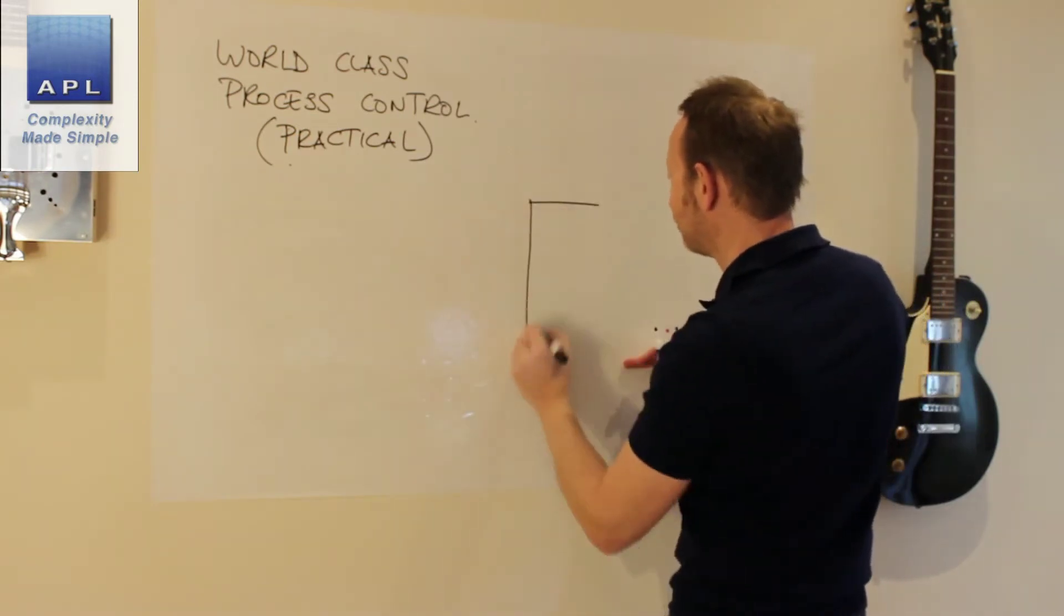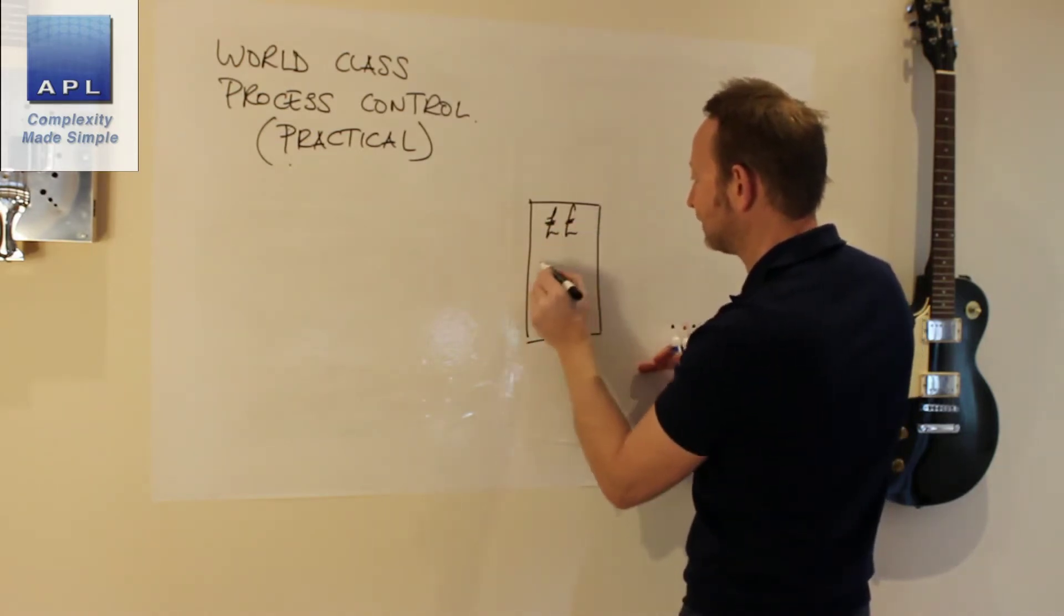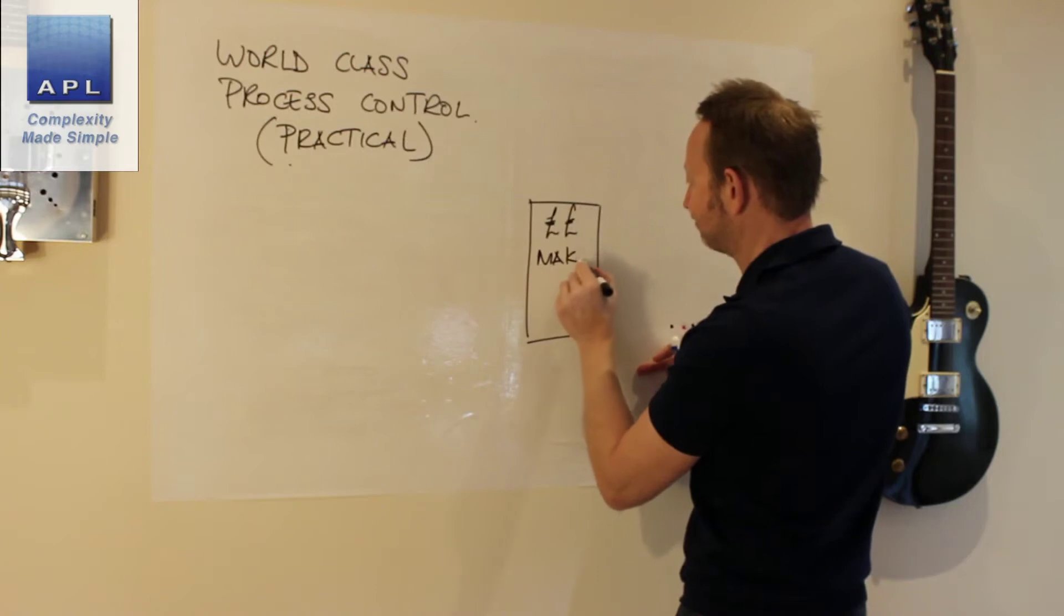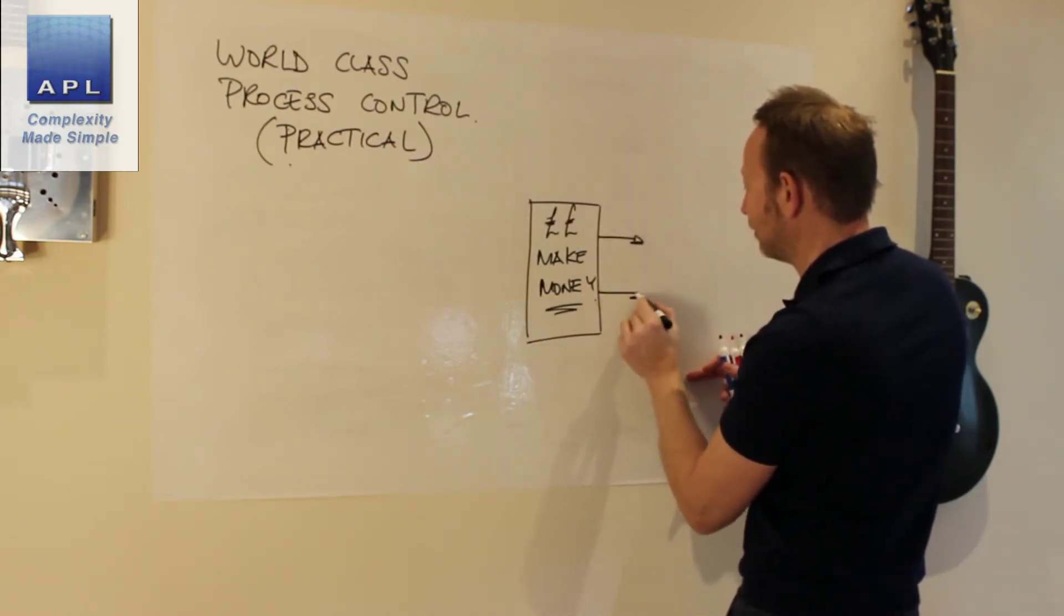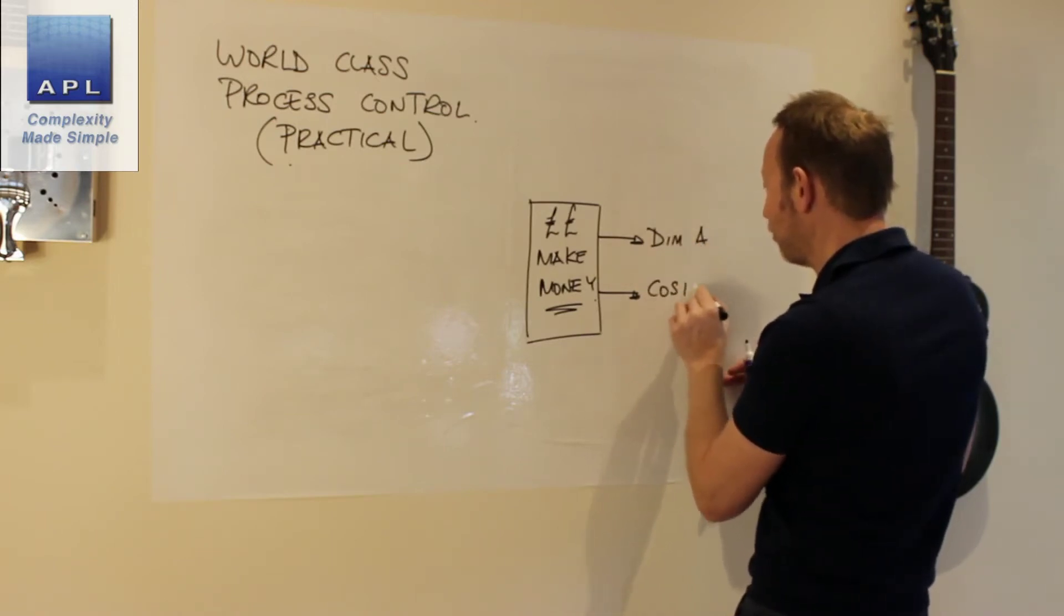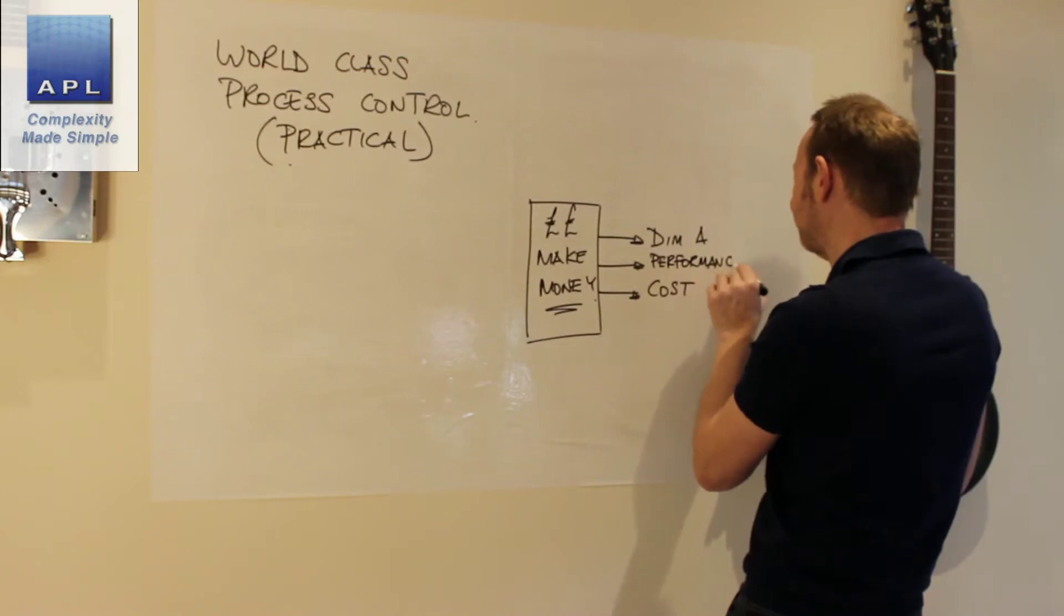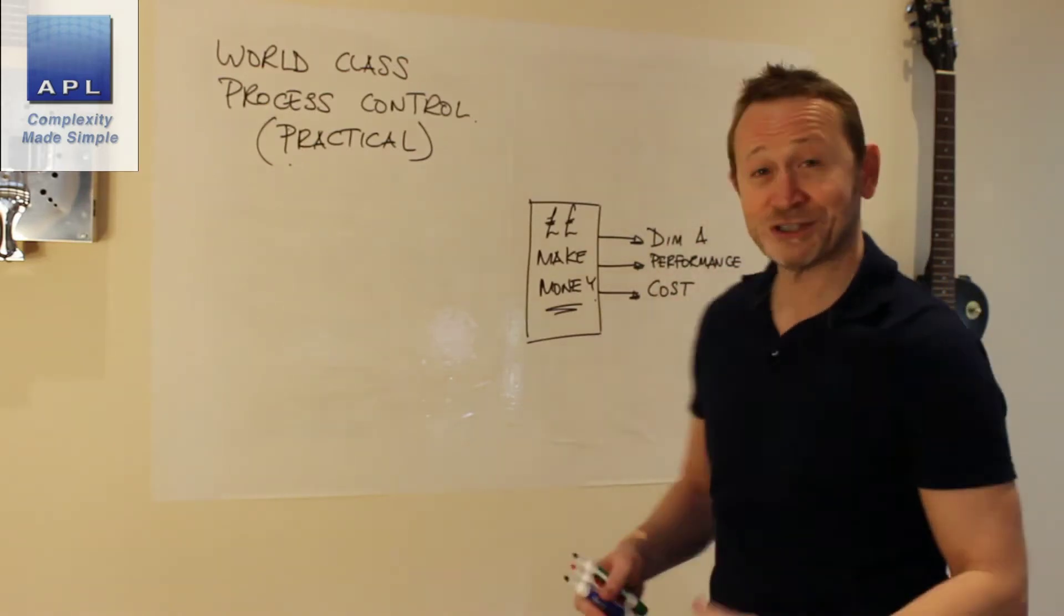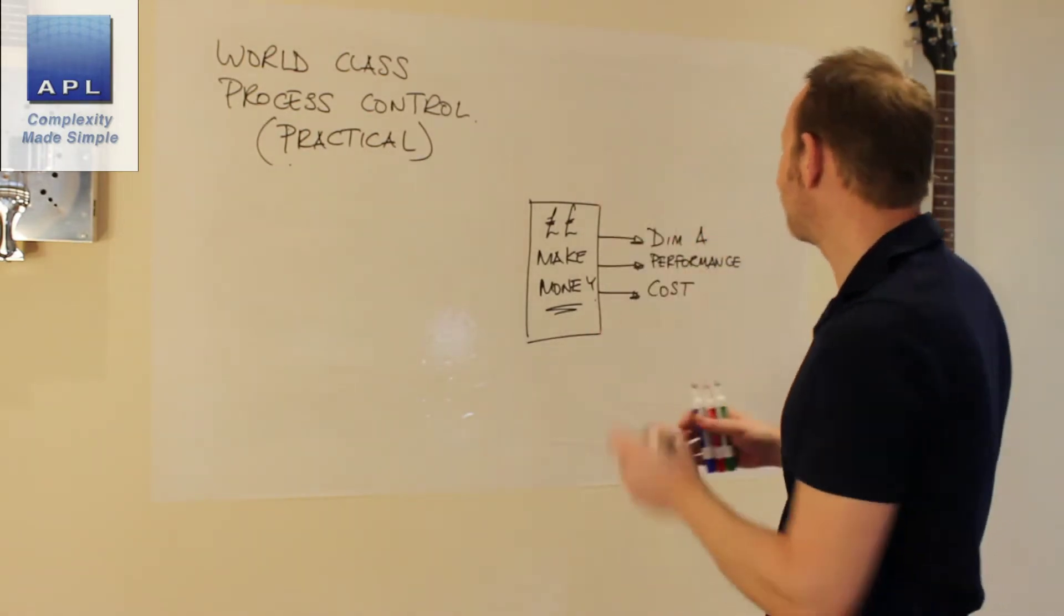Think about this. Every process you have, every money-making process you have, looks the same as your money-making machine. It's making something, providing a service to the customers. Could be hitting a dimension, could be hitting a cost, could be hitting some kind of performance criteria. What we want to do, of course, is guarantee that we're going to do those kinds of things. Over on this side, the outputs.